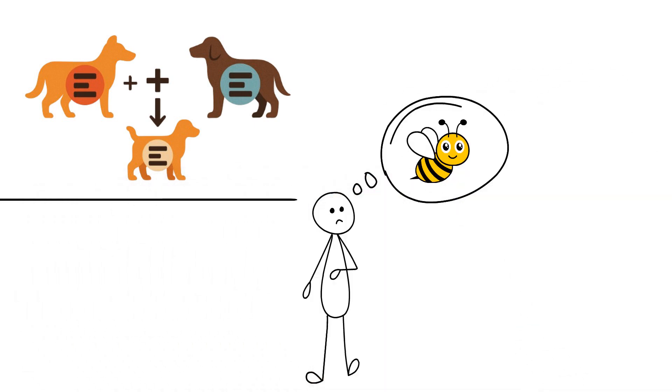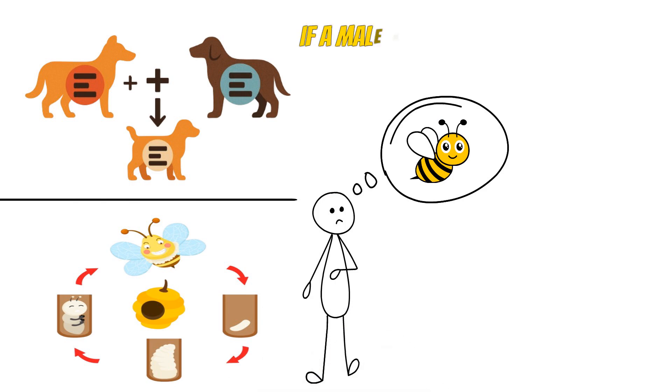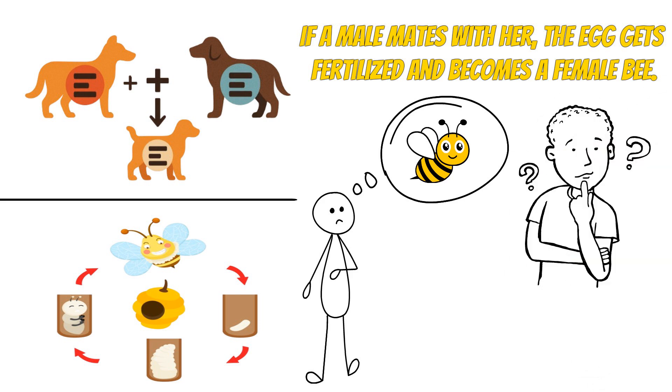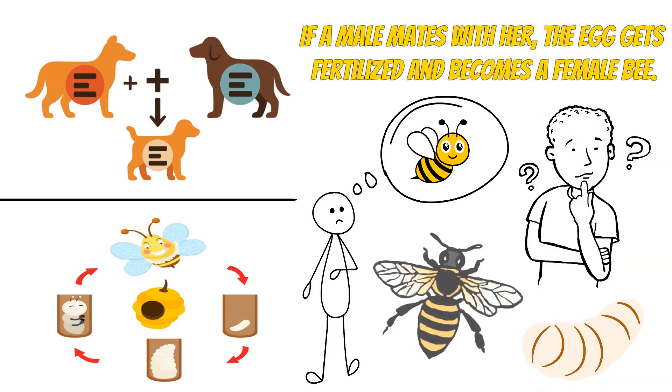Female bees lay eggs with half their genetic material. If a male mates with her, the egg gets fertilized and becomes a female bee. But if she skips the mating, the egg still hatches, but becomes a male bee.